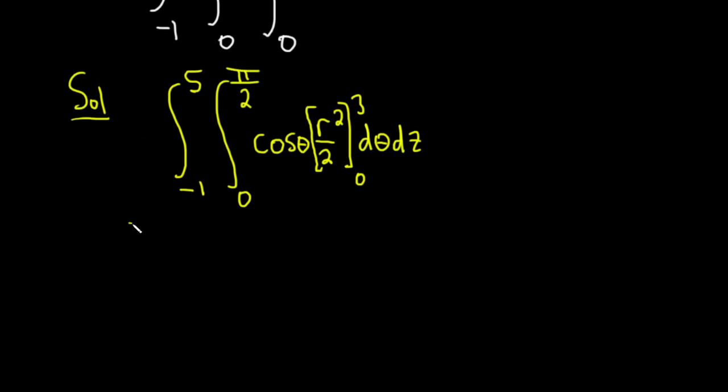We're going from negative 1 to 5, from 0 to pi over 2. So basically we're evaluating this, so we plug in 3 first, that'll give us 3 squared over 2. We subtract, we plug in 0, that's 0 squared over 2. This just gives us 9 over 2.